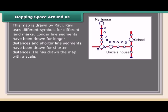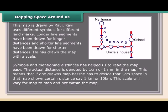This map is drawn by Ravi. Ravi uses different symbols for different landmarks. Longer line segments are drawn for longer distances and shorter line segments for shorter distances. He has drawn the map with a scale, symbols, and distances, which has helped us read the map easily.